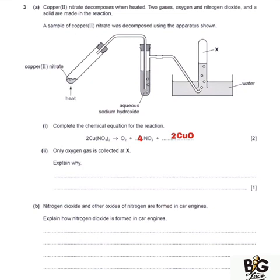For nitrogen, on the products I have 4 moles of nitrogen with 4 on nitrogen dioxide. The 2 outside the nitrate multiplies with everything inside the brackets: 2 multiplied by 1 gives 2, and the 2 on copper also multiplies through, giving 4 moles of nitrogen on the reactants as well. So nitrogen is balanced.